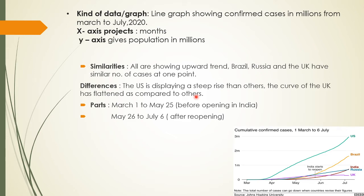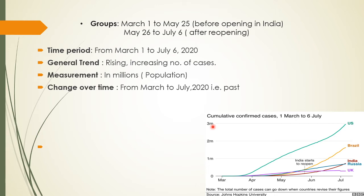Next we come to P — Parts. This is very important because it helps us divide our writing into at least two body parts. Taking the general trend line as reference, I have divided the information into two parts: from March 1 to May 25, and then from May 26 to July 6. March 1 to May 25 is before the reopening in India, and May 26 to July 6 is after the reopening of the lockdown in India. G stands for Groups — my groups remain the same as those two periods.